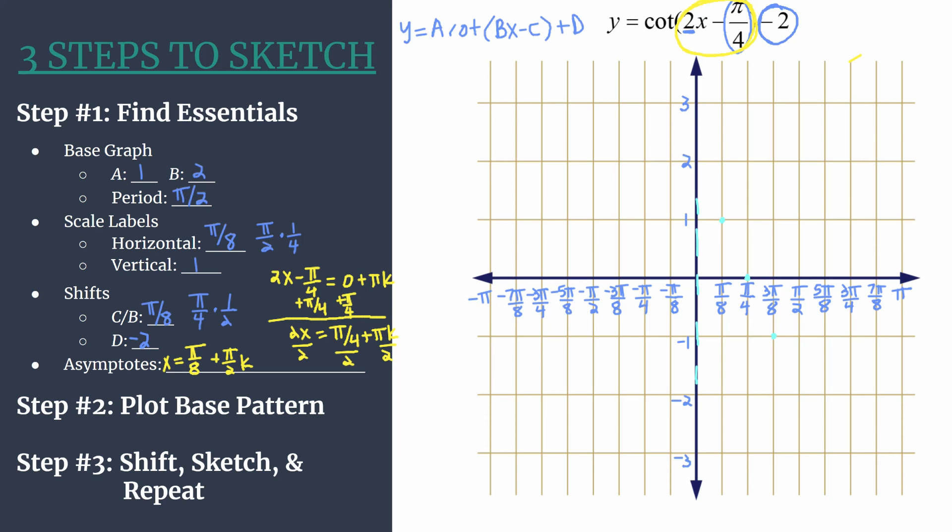Now that we have that, it's going to be really easy to shift. So on to step 3. Let's shift. Remember, we're moving each of these features, or points, right π over 8 and down 2. So the vertical asymptote is only affected by that move of right π over 8. That's one horizontal grid unit. So I'm marking my final graph in green here.